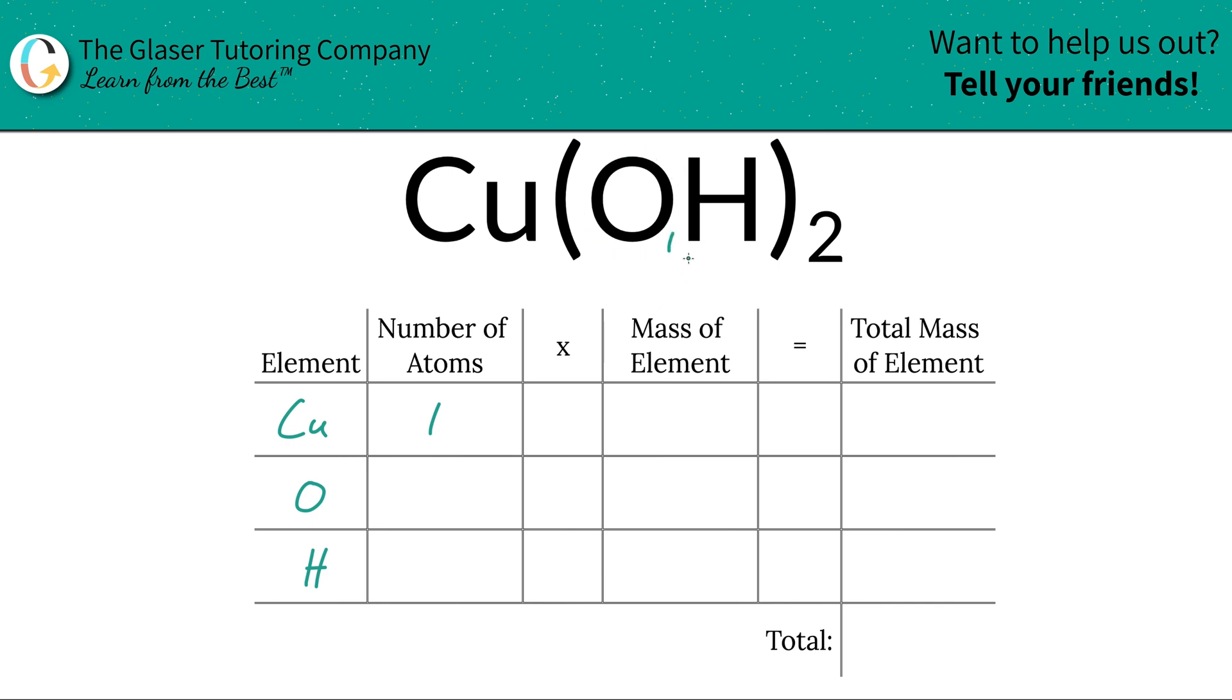But we don't just have one oxygen. We have one oxygen in the hydroxide polyatomic anion, but we have two of those anions, and therefore we should have two oxygens. The easier way to do it is take the subscript there and just multiply it by the outer subscript. So inner subscript times outer subscript, there's going to be two oxygen.